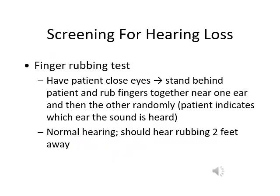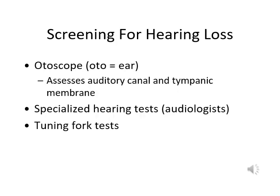For screening of hearing loss, you can do a finger rubbing test: stand behind the patient, ask them to close their eyes, rub your fingers, and ask which side they hear the rubbing. A patient with normal hearing should be able to hear the rubbing from two feet away. Other tests include using an otoscope to observe the auditory canal and tympanic membrane, as well as specialized hearing tests performed by an audiologist.